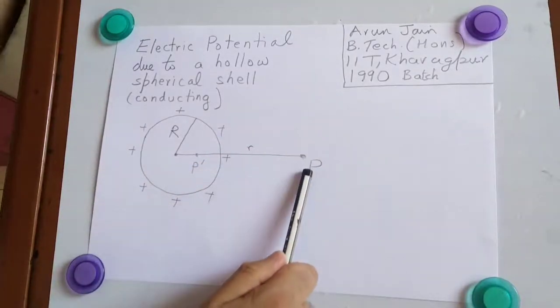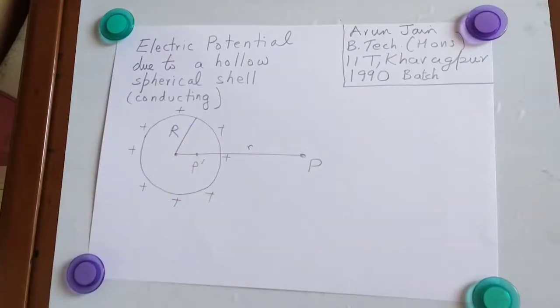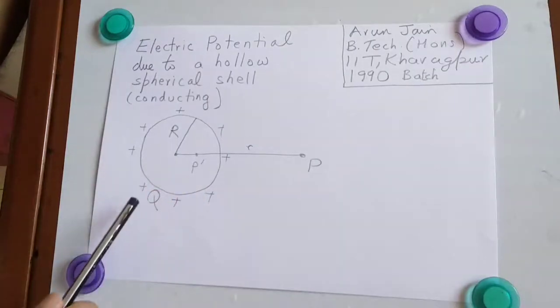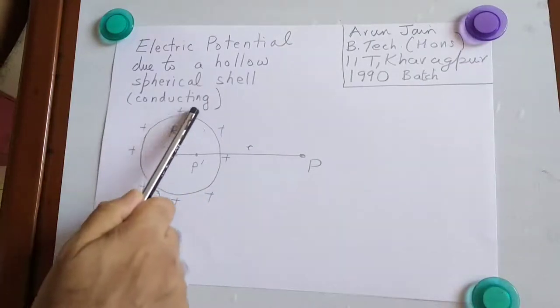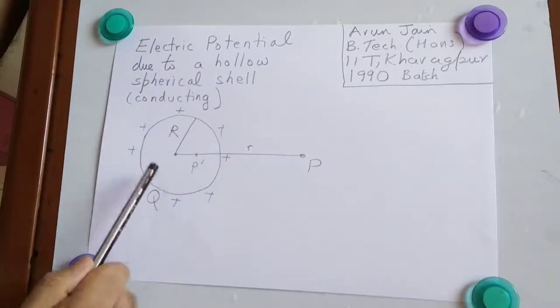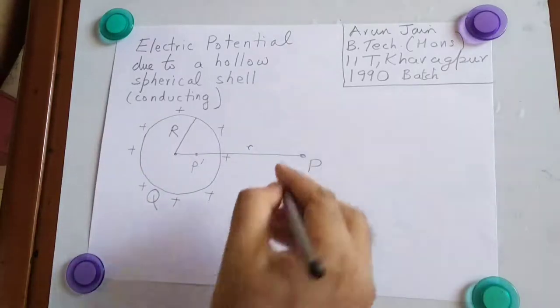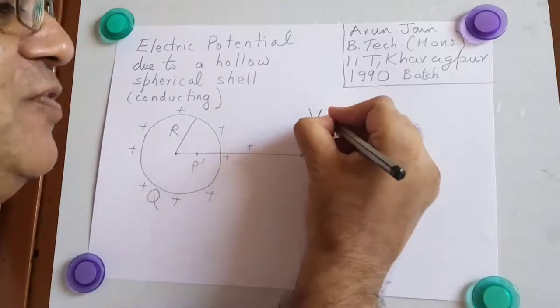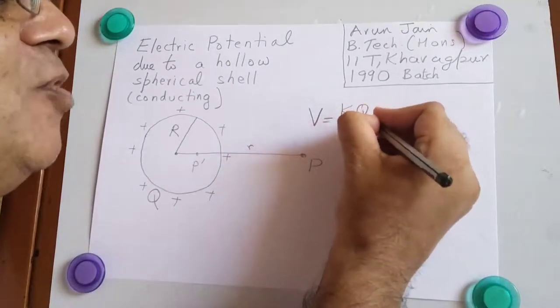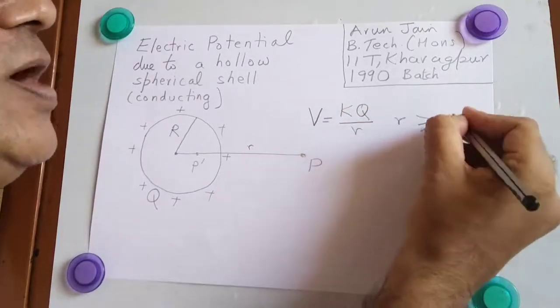For an outside point, these charges behave like a point charge at centre as per shell theorem. So this Q that is uniformly distributed over this conducting spherical shell can be assumed to be at the centre to find the potential at point P. So the potential at point P will be given by KQ by small r if small r is more than or equal to capital R.